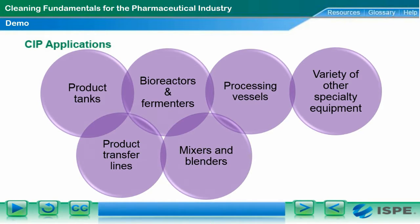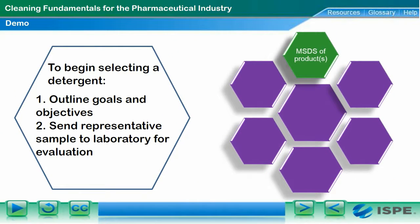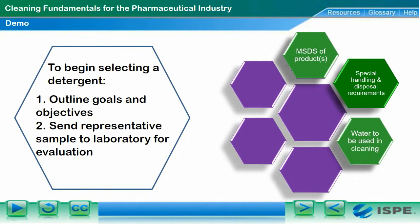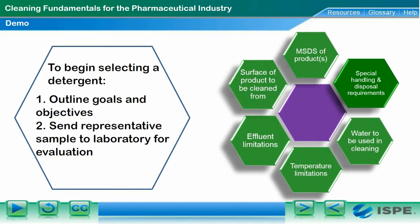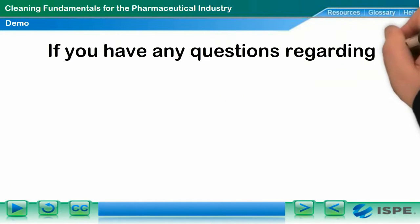Here are the process equipment used in CIP applications. Every chemical and pharmaceutical company has their own approach on how a detergent is selected. The key to your evaluation process is to make sure you have outlined all your goals and objectives that you are trying to accomplish in your cleaning task at hand.